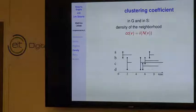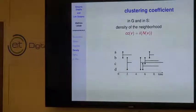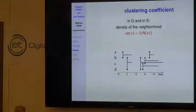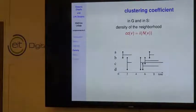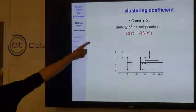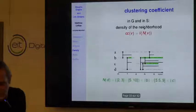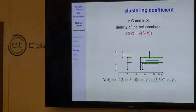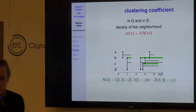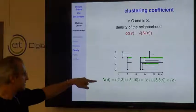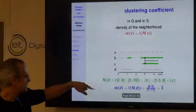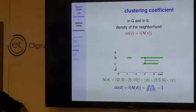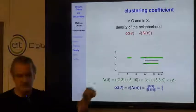Likewise, the clustering coefficient is a classical notion in graph analysis. The clustering coefficient of a node is the probability that two of its neighbors are connected together—it's nothing but the density of the neighborhood of that node. So I need no extra work to define it on a stream: the clustering coefficient of a node is the density of its neighborhood substream. Concretely, for node D, I take its neighborhood cluster, take the induced substream, and compute its density.